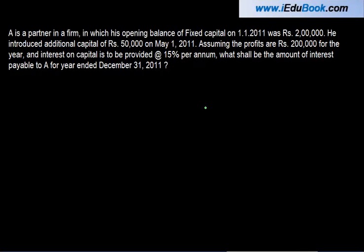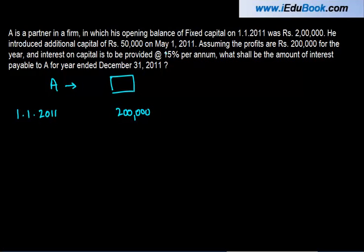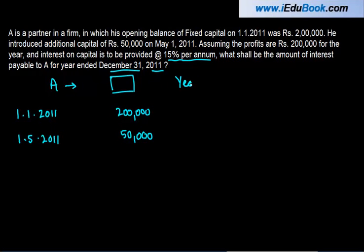A is a partner in a firm whose opening balance of fixed capital on 1-1-2011 was ₹2 lakh. He introduced additional capital of ₹50,000 on 1-5-2011. Assuming profits are ₹2 lakh for the year and interest on capital is to be provided at 15% per annum, what shall be the amount of interest payable to A for the year ended 31-12-2011?